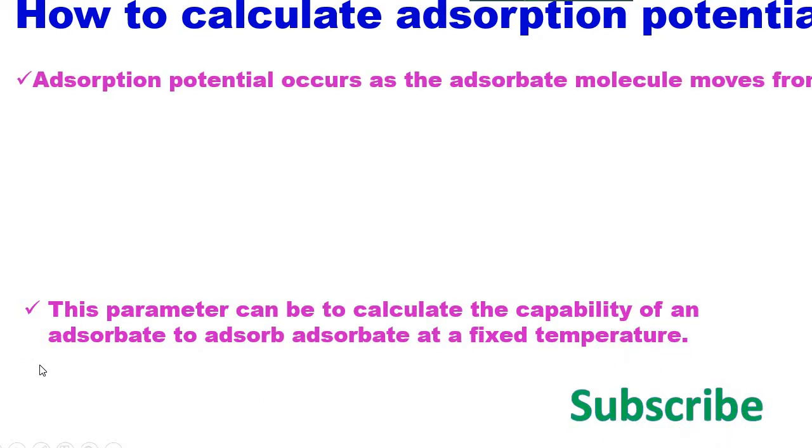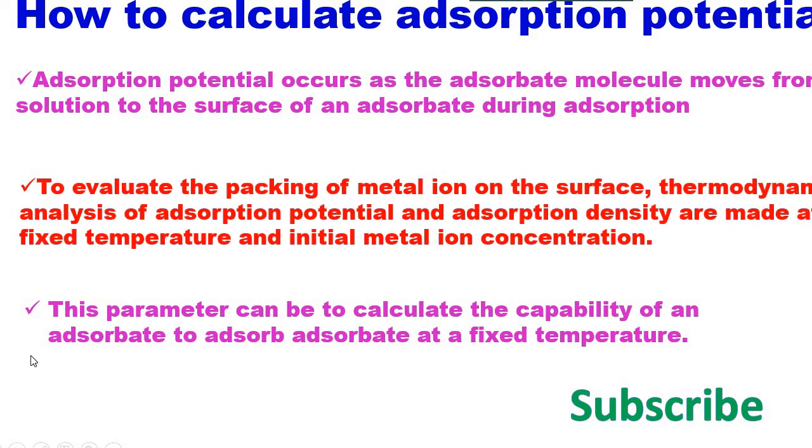Adsorption potential occurs as the adsorbate molecules move from solution to the surface of an adsorbent during adsorption. To evaluate the packing of metal ion on the surface, thermodynamic analysis of adsorption potential and adsorption density are made at a fixed temperature and initial metal ion concentration. This parameter can be used to calculate the capability of an adsorbent to adsorb at a fixed temperature.